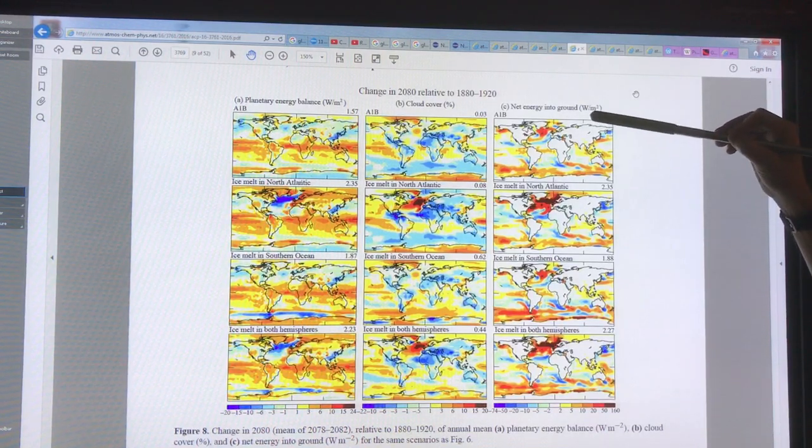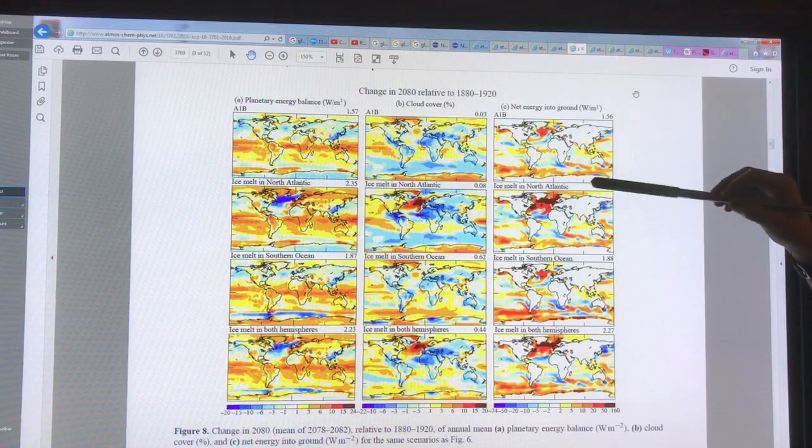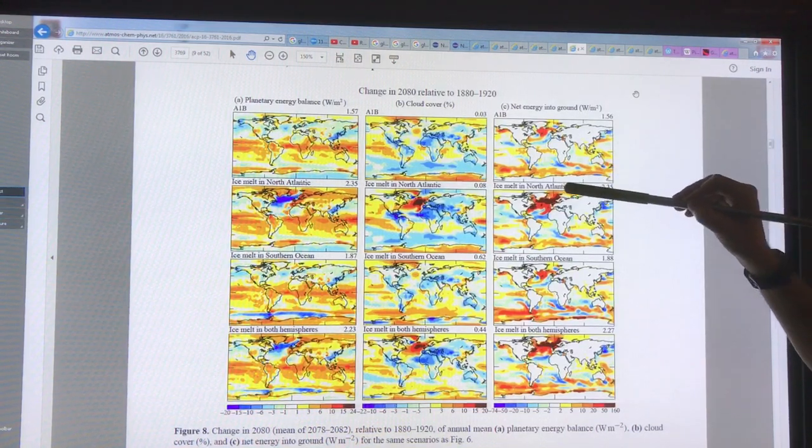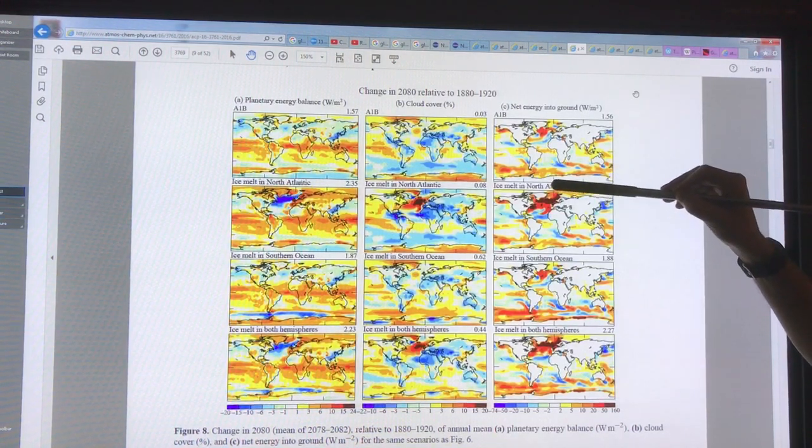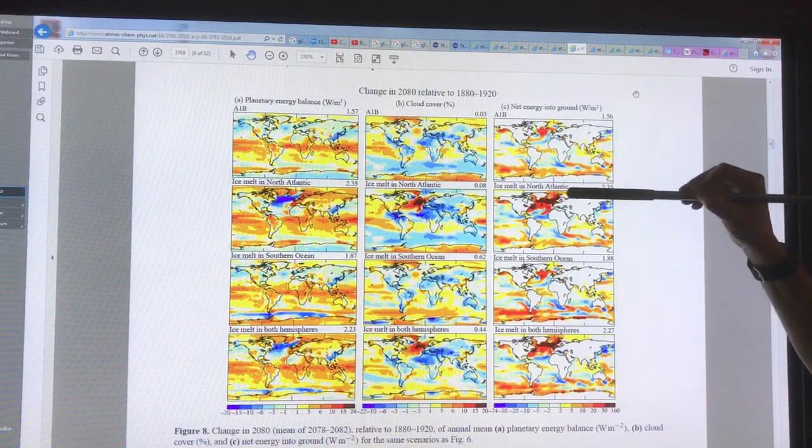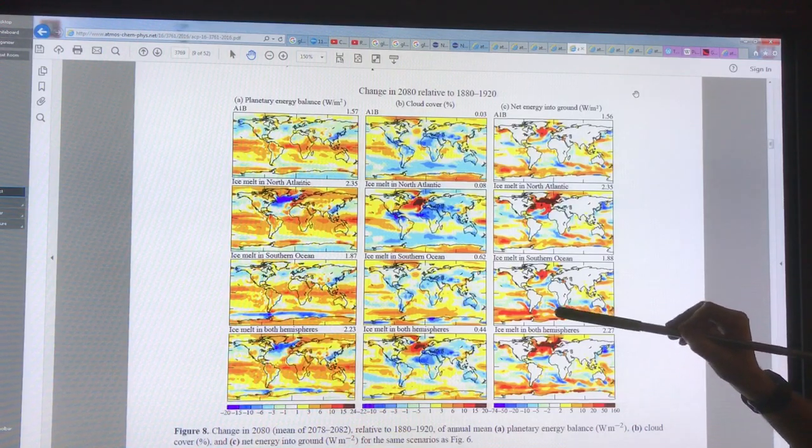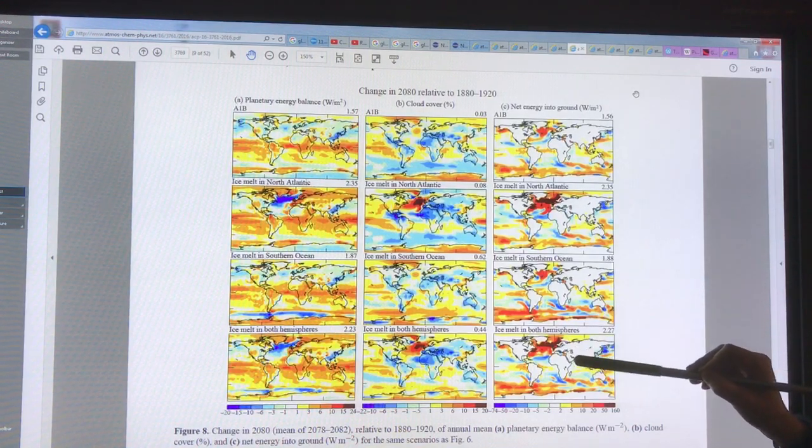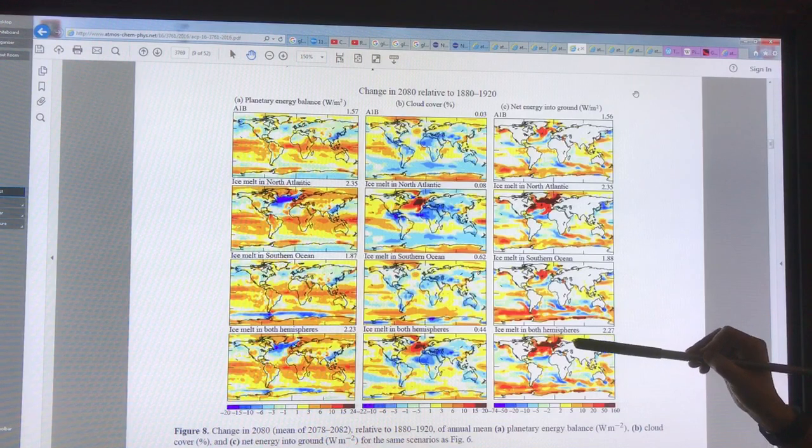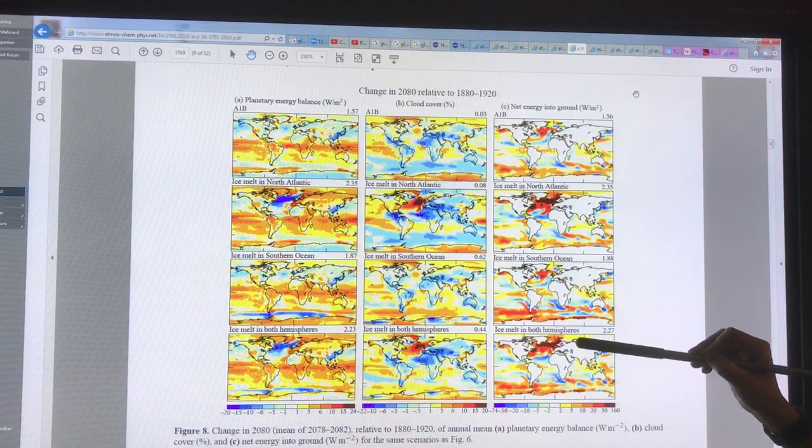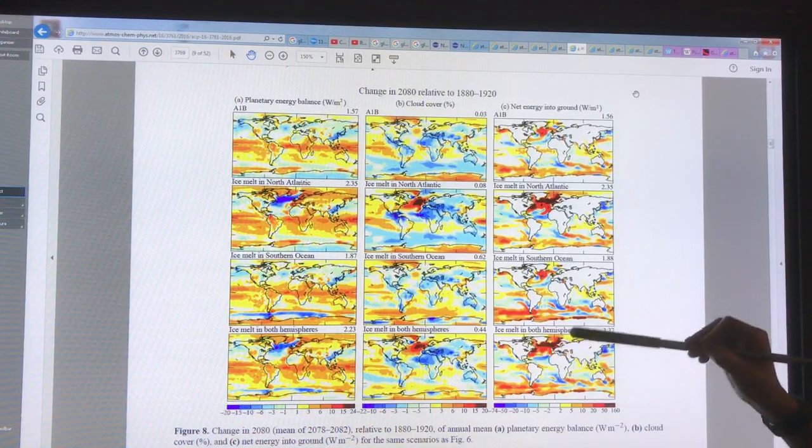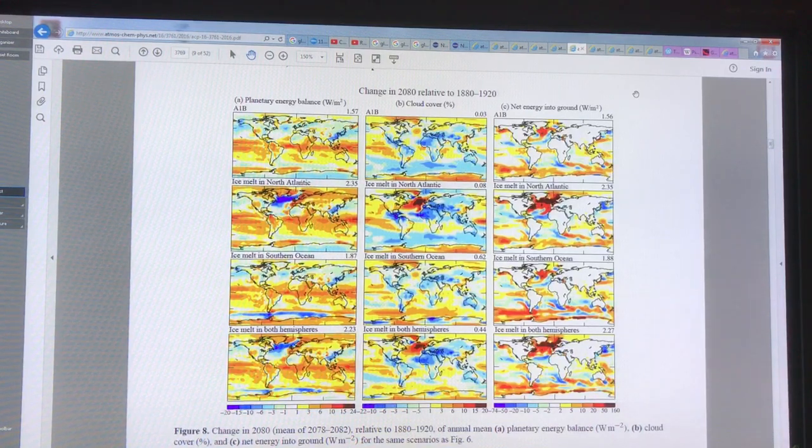This is net energy going into the surface. There's lots of energy—if we're melting off Greenland ice, there's lots of energy going to heat up that water. In the southern ocean we get the same sort of thing here. Ice melt in both hemispheres, the most likely scenario, would be extra energy going into those regions to heat that ice up to melt it.